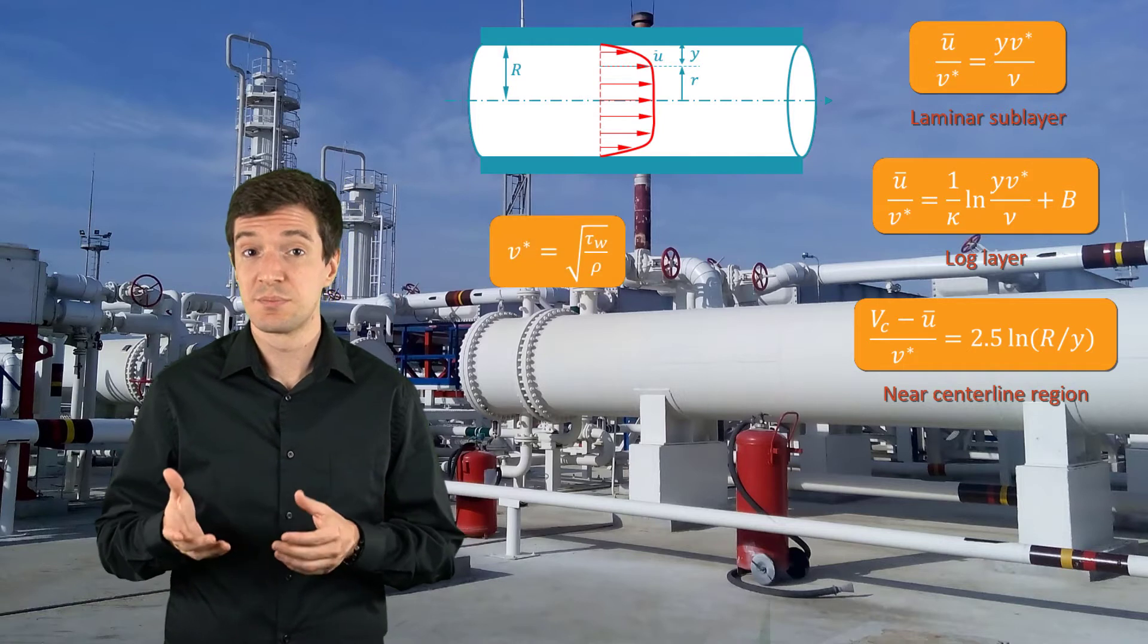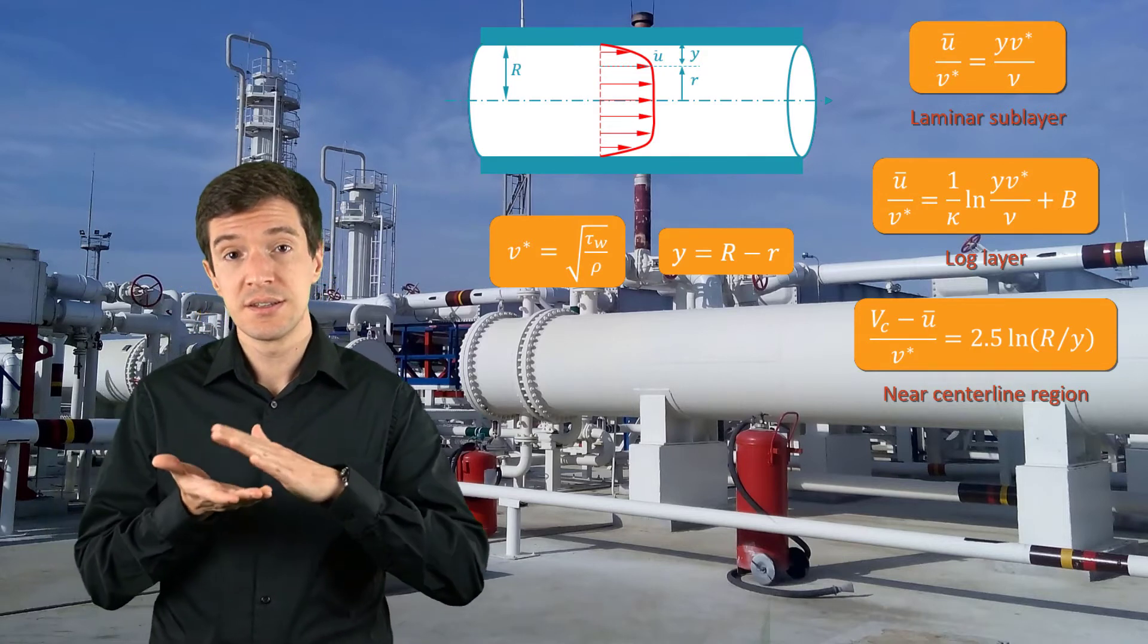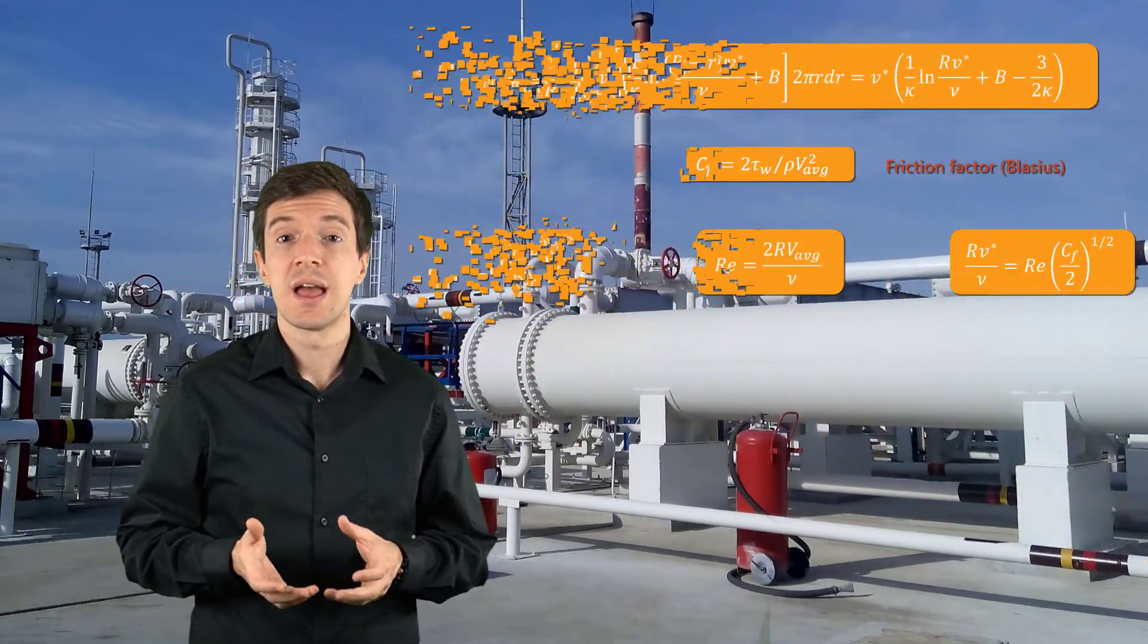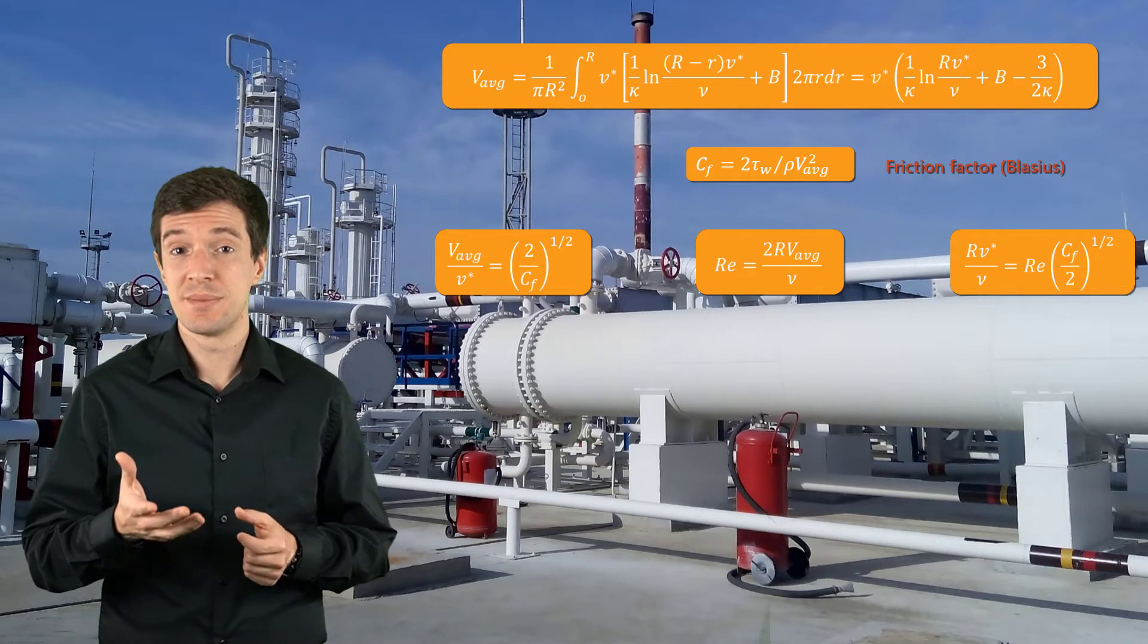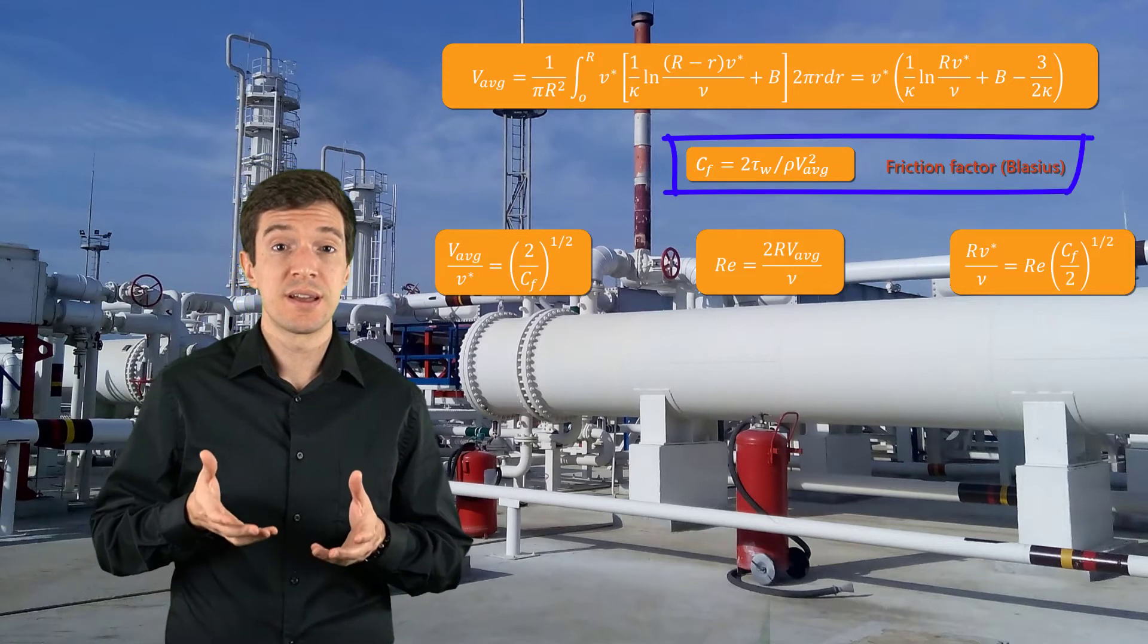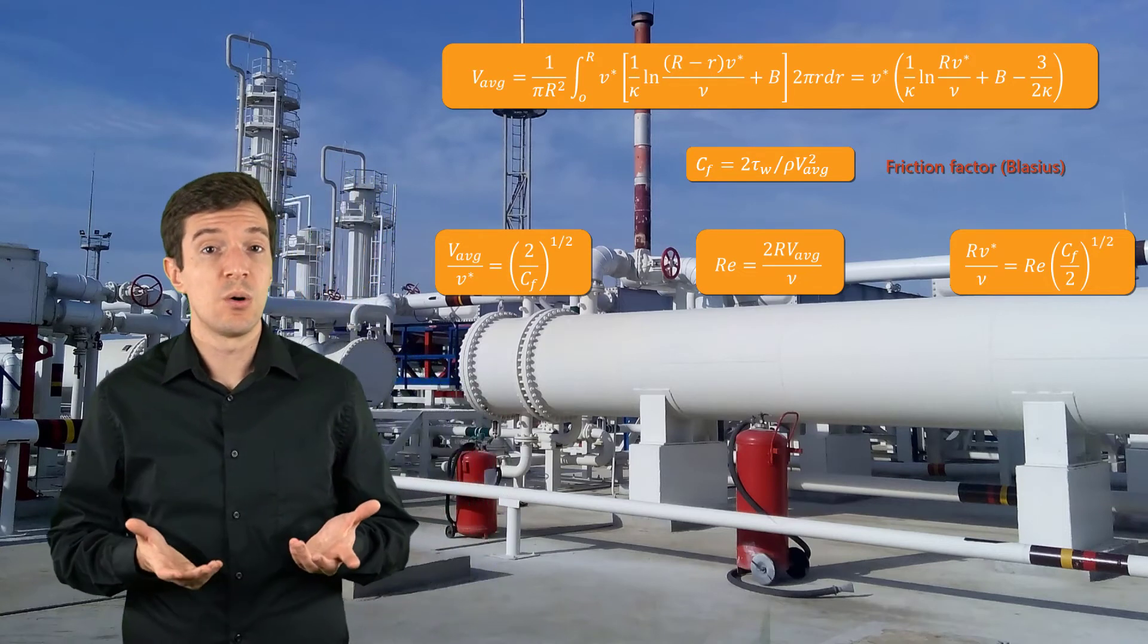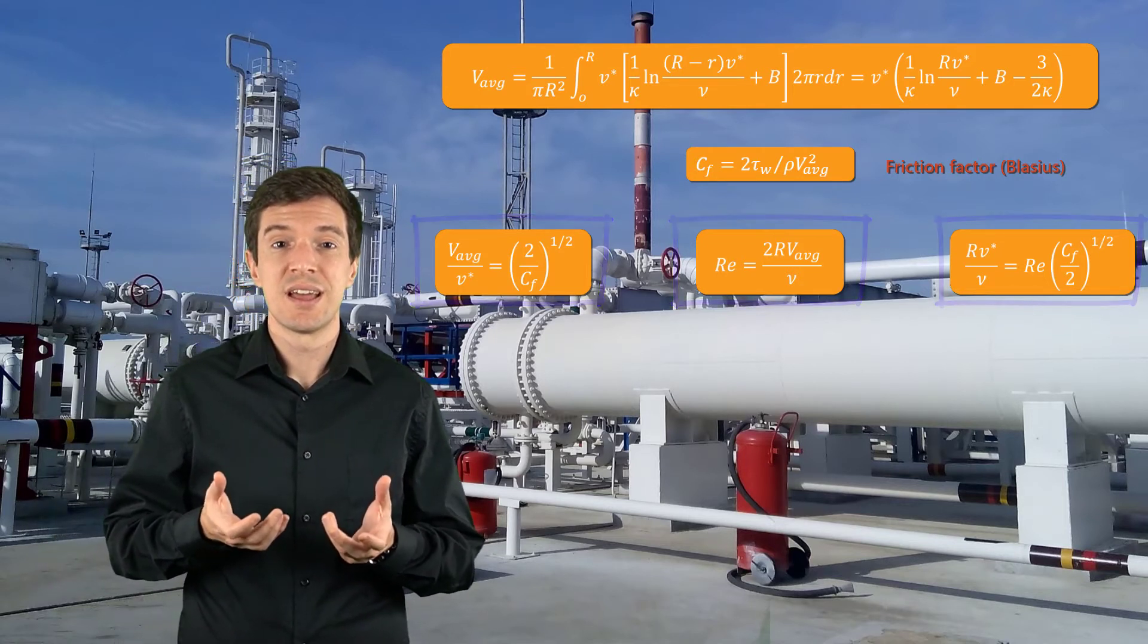Let's recall that in these expressions the v-star term represents the friction velocity and the y-coordinate represents the distance from the wall. If we assume that the logarithmic distribution comprehends the largest part of the boundary layer, we can obtain an approximate estimate of the average pipe velocity. This can be done integrating the log law along the pipe radius. Blasius derived an empirical form of the friction factor or pipe friction factor based on the average velocity. Using this expression we can also derive these other three relations that show us that the average velocity is essentially a skin friction relation.